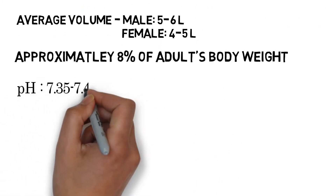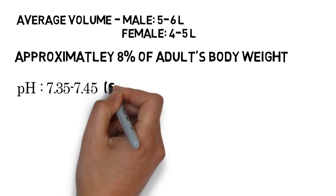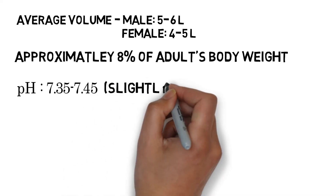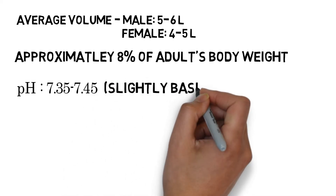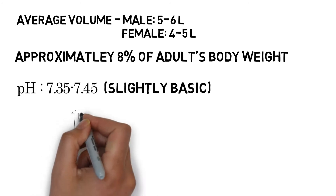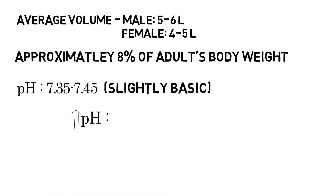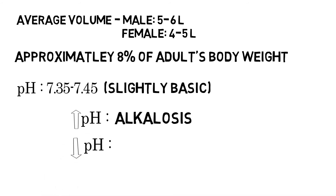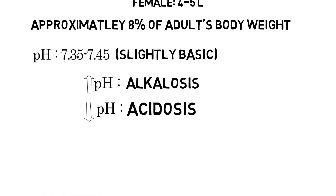The pH of blood is 7.35 to 7.45 in the normal range. According to pH level, blood is slightly basic. When the pH level is more than 7.45 we call this state alkalosis, and when the pH level is less than 7.35 this state is called acidosis.